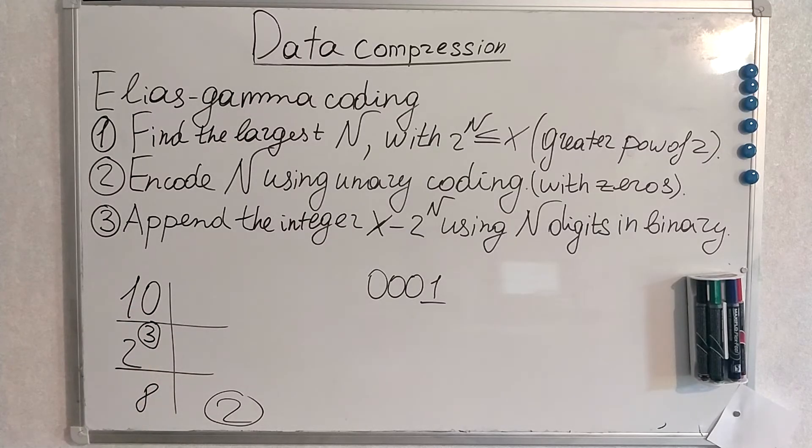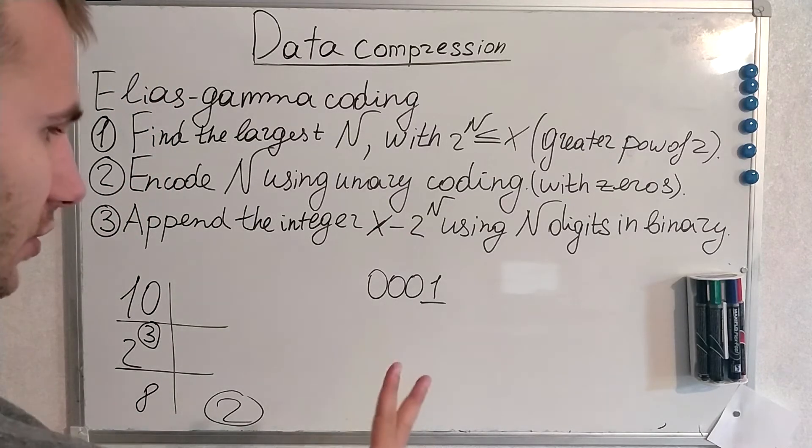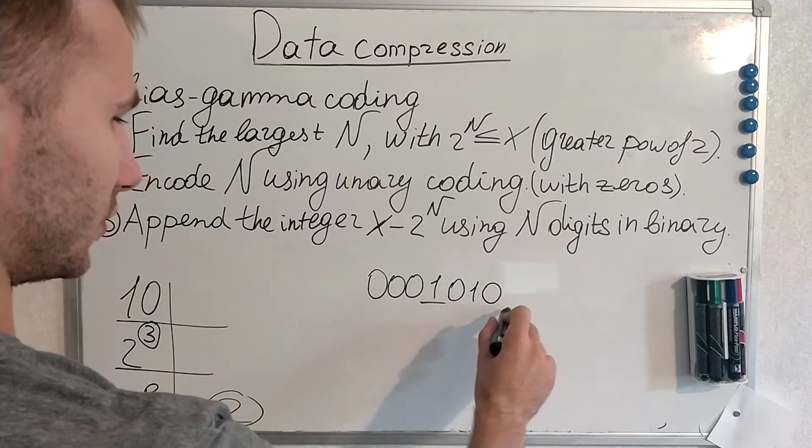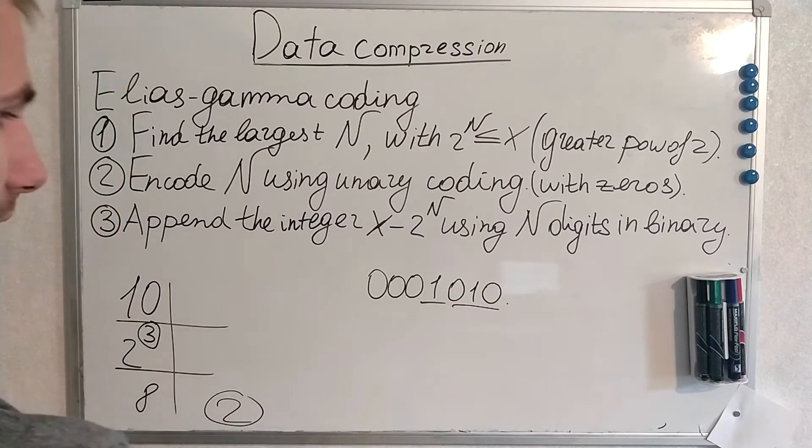We will append 2 in binary using N digits. We will use 3 digits. Thus it will be 0, 1, 0. This is 2 in binary. And that's it. That's actually how the algorithm works.